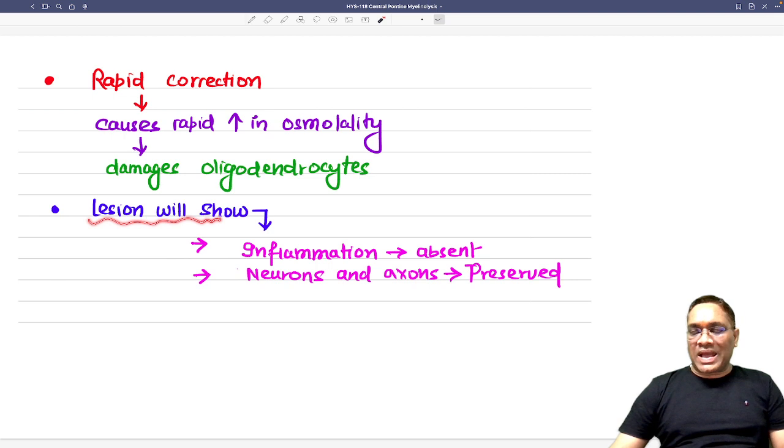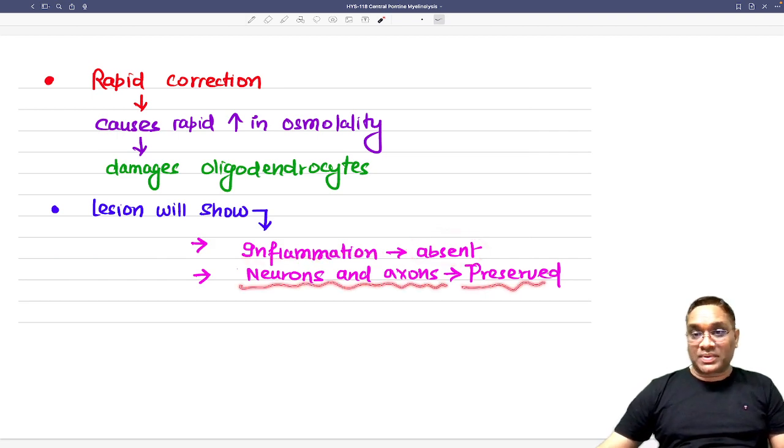But in this lesion, characteristically, you will find there will be no inflammation. So inflammation will be absent and neurons and axons are relatively preserved.